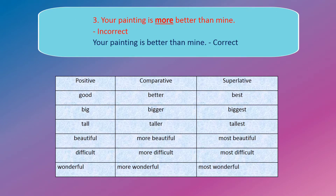Your painting is more better than mine — this is incorrect. The mistake here is with 'more.' The correct answer is: your painting is better than mine. The word 'better' is the comparative form of 'good,' so don't say 'more better.' For other adjectives like 'big' and 'tall,' the comparative forms are 'bigger' and 'taller.' Some adjectives like 'beautiful,' 'difficult,' and 'wonderful' don't have these -ER comparative forms, so we say 'more beautiful,' 'more difficult,' and 'more wonderful.' Try to memorize the correct comparative and superlative forms of common adjectives.